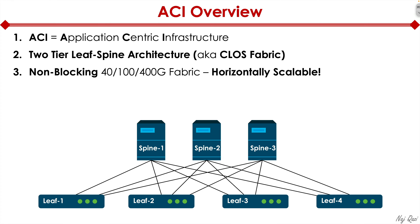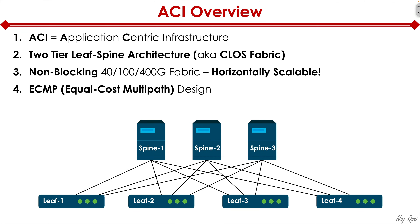This model is horizontally scalable. If you want to add more leaf switches, you can simply do so until the spines run out of capacity. Then you just add another spine, which gives you the ability to add that many more leaves. You would want to check Cisco documentation to see how many leaf switches are supported per spine, depending on the spine switch you're buying. That's an important design concept.